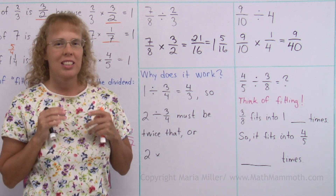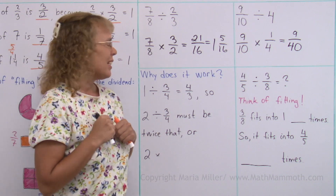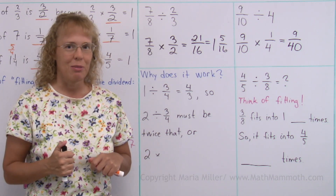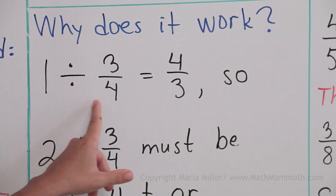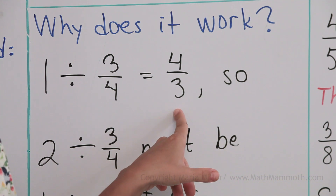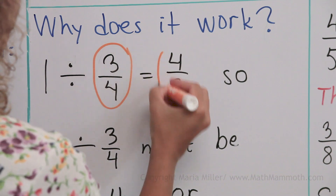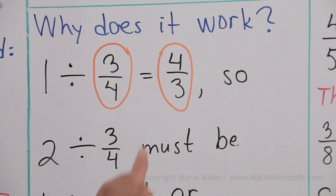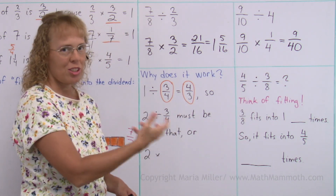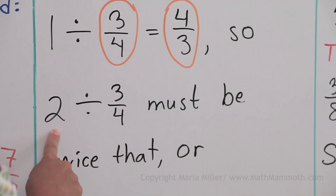Now we will spend just a little time trying to understand why this shortcut works. It is based on those reciprocal numbers and that fitting idea. For example, 1 divided by 3 fourths equals 4 thirds. These two are reciprocal numbers, so if you multiply them you get 1 — that's where you get that division, because division is the opposite operation of multiplication.